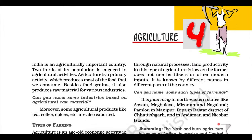Subsistence farming. This type of farming is still practiced in few pockets of India. Primitive subsistence agriculture is practiced on small patches of land with the help of primitive tools like hoe, dao, and digging sticks, and family or community labor. This type of farming depends upon monsoon, natural fertility of the soil, and suitability of other environmental conditions to the crops grown.